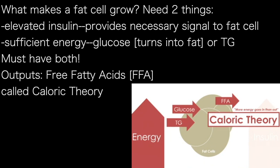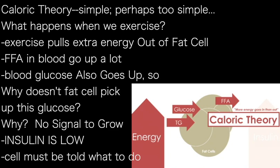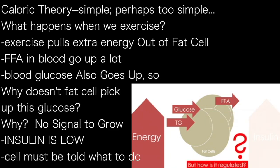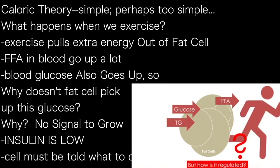However, even right here we've encountered a bit of a conundrum. If it truly is just excess energy in the blood — calories in the blood that need to be stored — what happens then with exercise? Because when we exercise, the amount of energy coming out of the fat cell goes up. Free fatty acids go up a lot. But so too do other energy sources in the blood, like glucose. Why isn't the fat cell picking up all of this glucose during exercise? Why isn't it getting the overall signal that it should be growing because of all this glucose available in the blood?